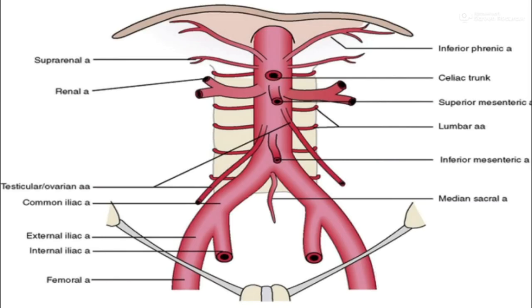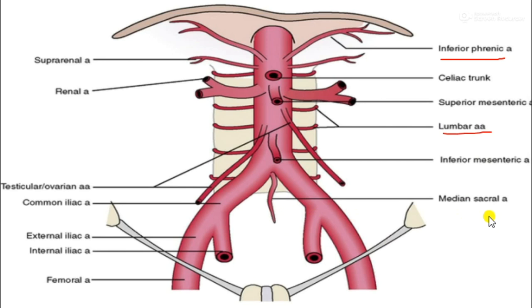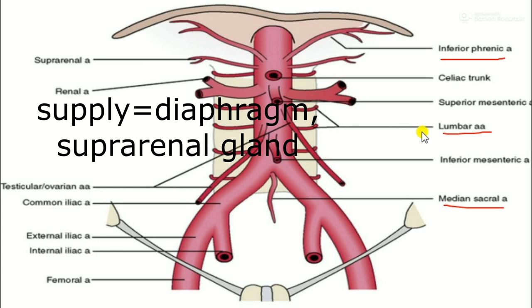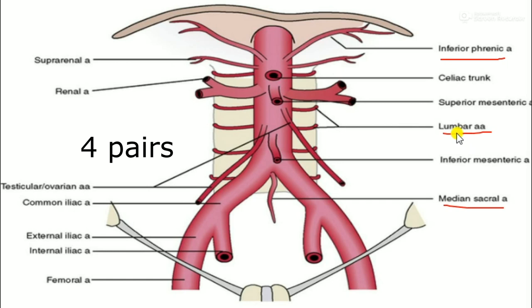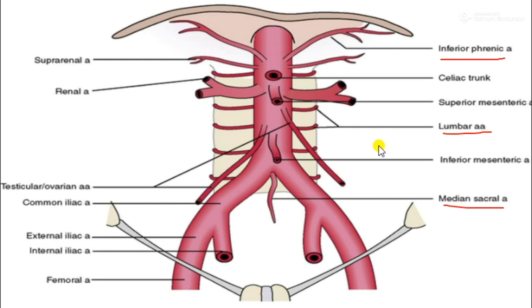The parietal branches of the abdominal aorta are the inferior phrenic arteries, the lumbar arteries, and the median sacral artery. The inferior phrenic arteries are paired and arise from the uppermost segment of the abdominal aorta, supplying the diaphragm and suprarenal gland. The lumbar arteries are four pairs that run laterally crossing the lumbar vertebral bodies, supplying the muscles of the back and abdominal wall, and each gives a dorsal branch to supply the spinal cord.